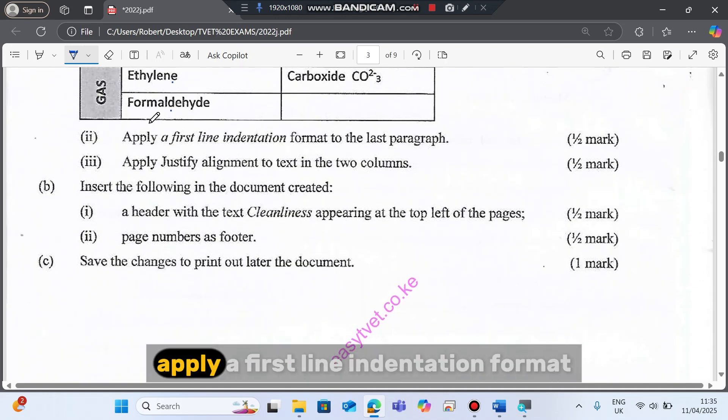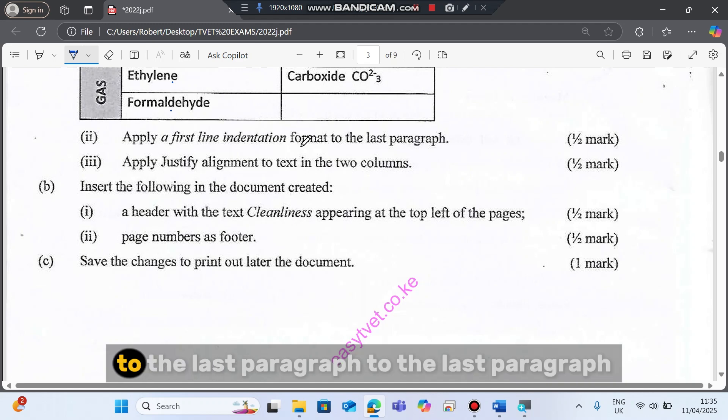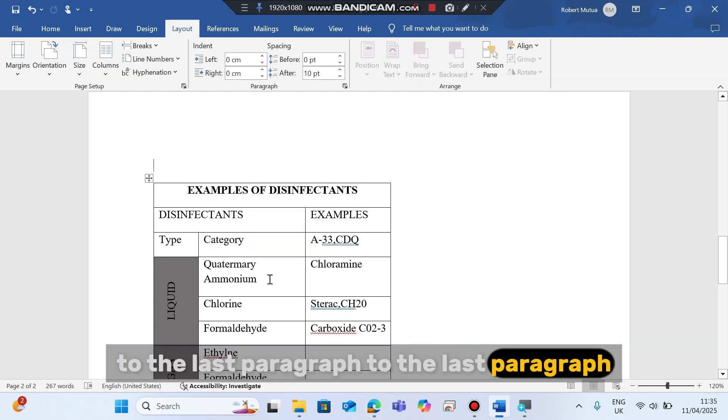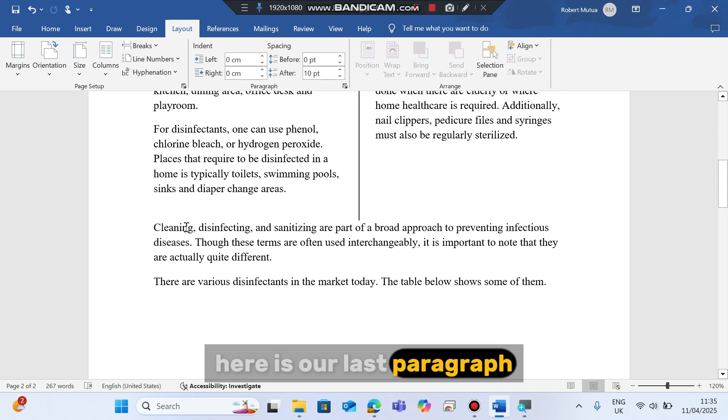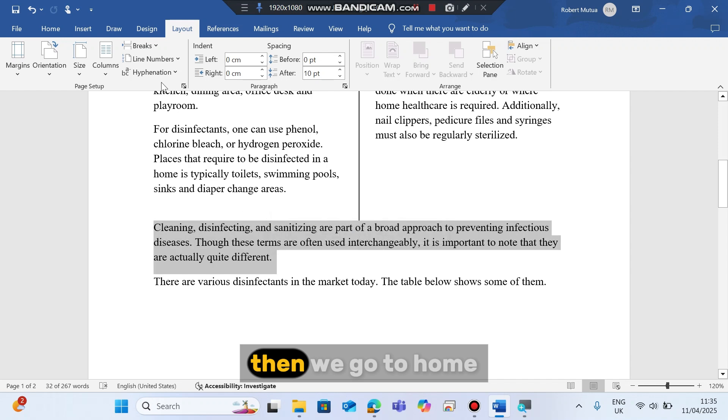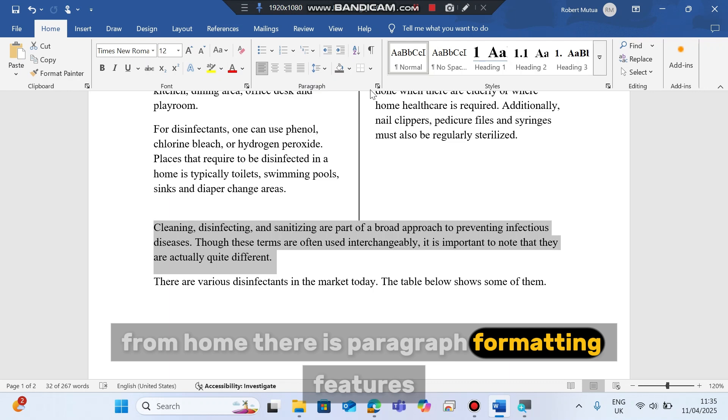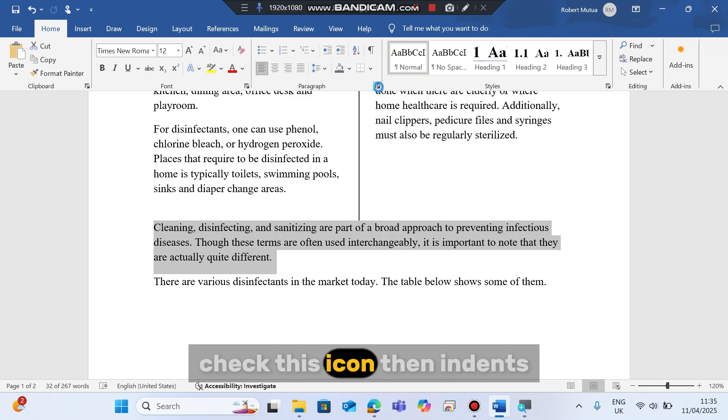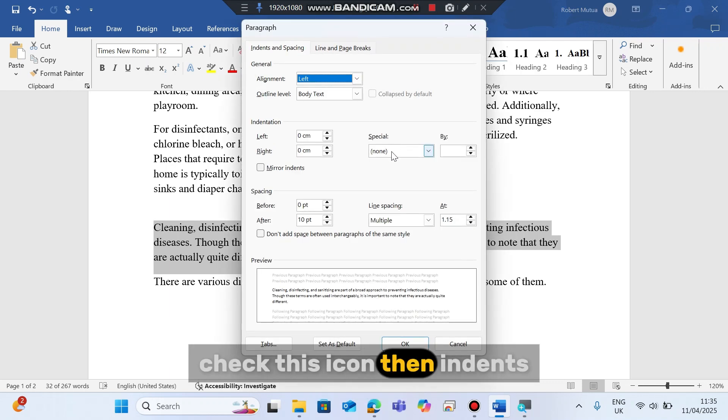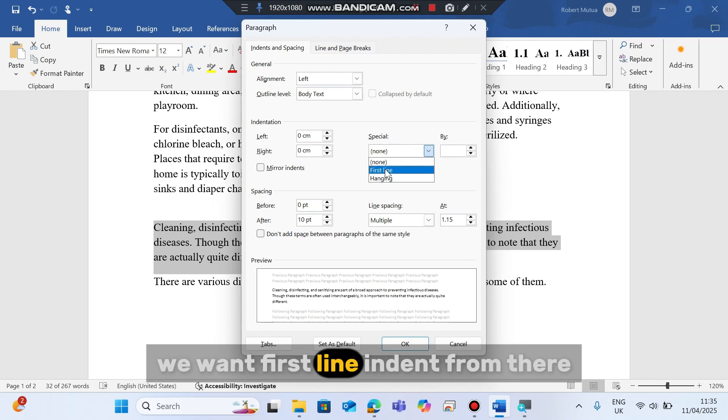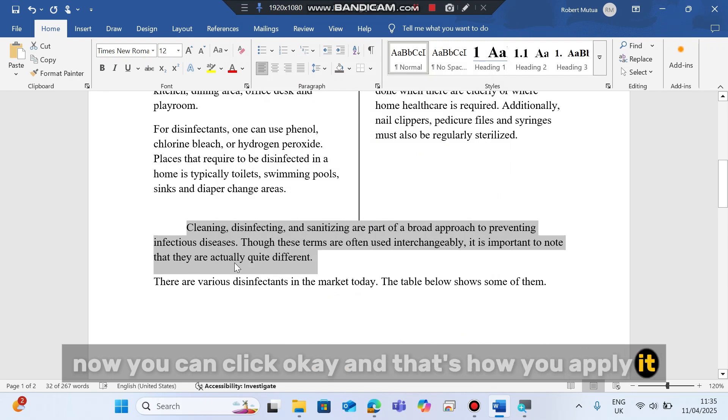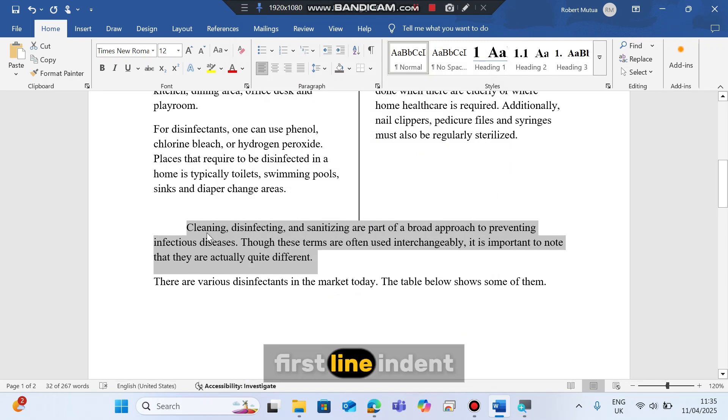Now the other question is apply a first line indentation format to the last paragraph. To the last paragraph. Here is our last paragraph. You select all of it. Then we go to home. From home, there are paragraph formatting features. Let's check this icon, then indents. We want first line indent. From there, now you can click OK. And that's how you apply it. First line indent.